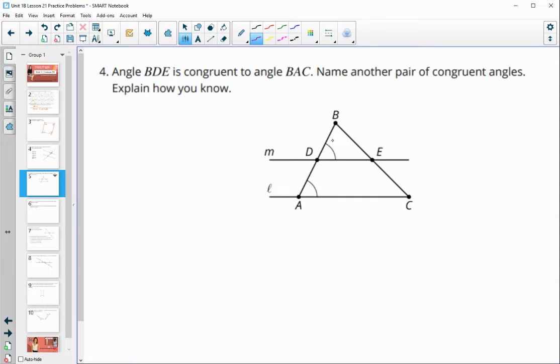Number four, angle BDE. So this angle here is congruent to angle BAC. See this angle. Name another pair of congruent angles and how you know. So these two are corresponding angles. So that means that angle M and angle L are going to be parallel to each other. And then that helps us to then see that any other corresponding angles would be congruent. And so angle BED would be congruent to angle BCA. So BED is congruent to angle BCA.